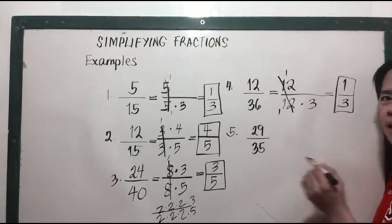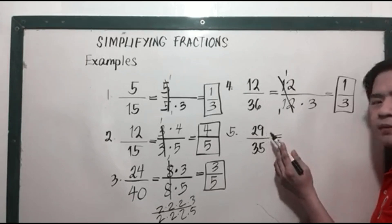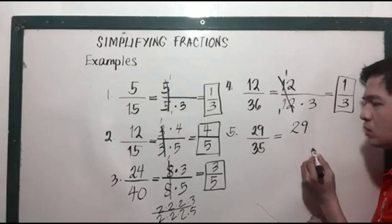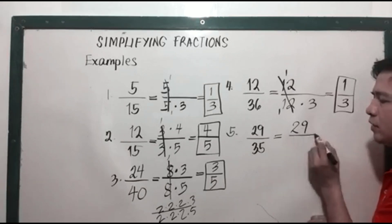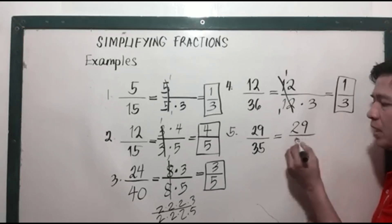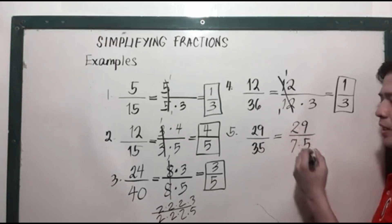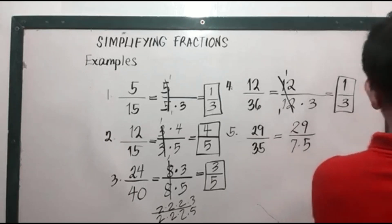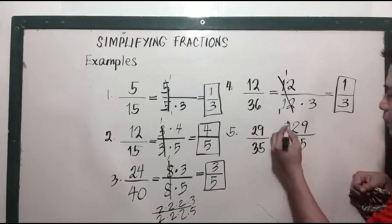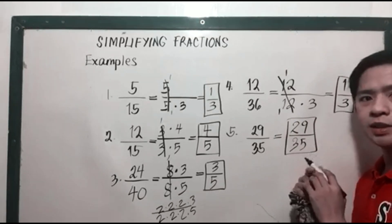Number 5, we have 29 over 35. 29 is already a prime number, so you can't factor it further aside from 29 times 1. 35 can be factored as 7 times 5, but there are no common factors between 29 and 35, so 29 over 35 is already in its lowest term and cannot be reduced further.